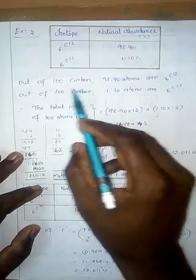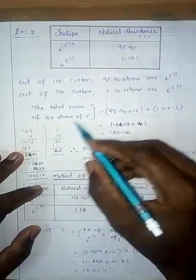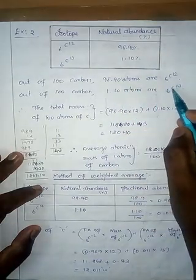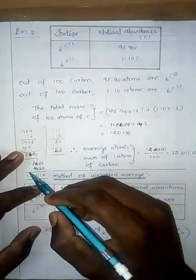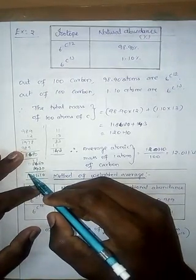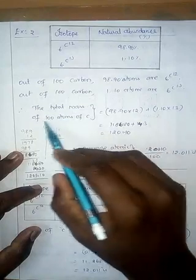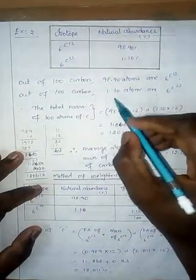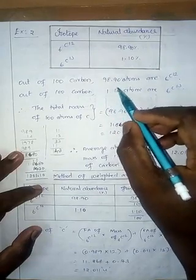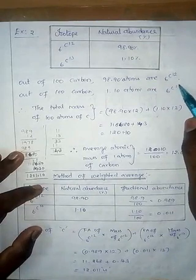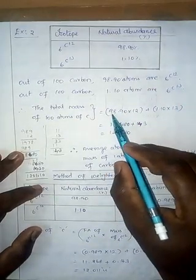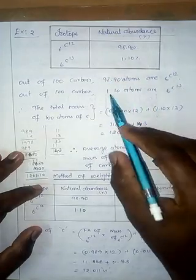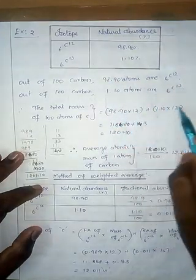Out of every hundred carbons, one point one zero atoms are six carbon thirteen. So I will calculate total mass of one hundred atoms: this number into mass plus this percent into mass. So add it. So ninety eight point nine zero into twelve plus one point one zero into thirteen.